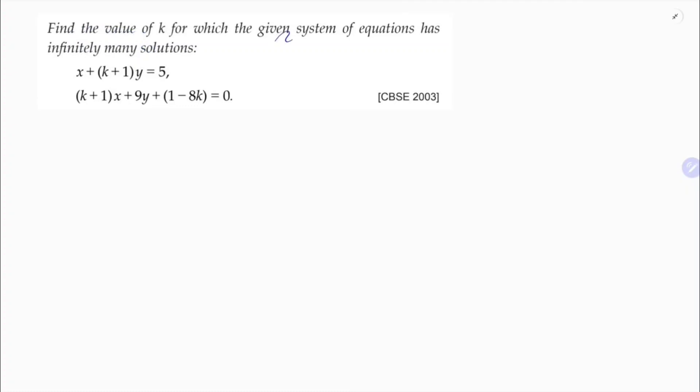Find the value of k for which the given system of equations has infinitely many solutions. If two lines a1x plus b1y plus c1 and a2x plus b2y plus c2 have infinite solutions, the condition is a1 by a2 equals b1 by b2 equals c1 by c2. This is the condition.